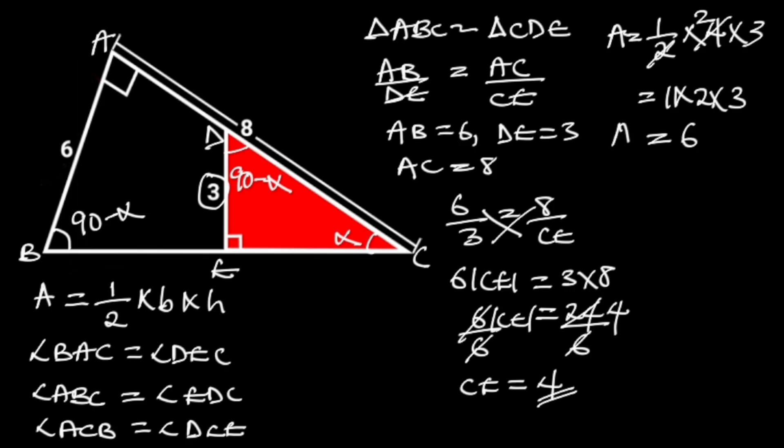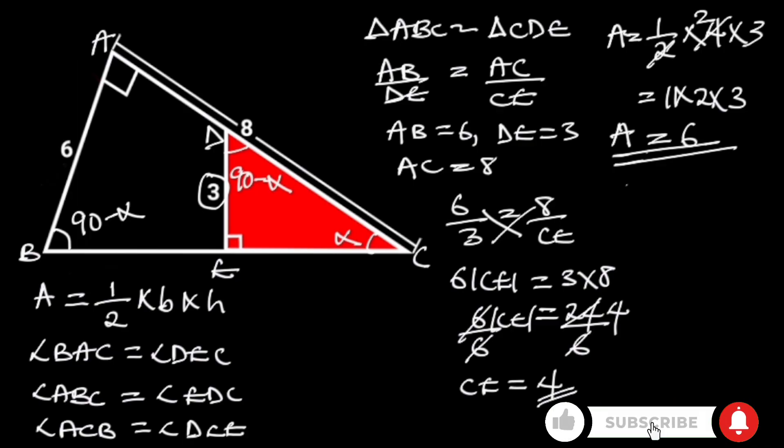Hence the area of triangle CDE is equal to 6 square units. Thanks for watching. If you like this video make sure to subscribe for more.